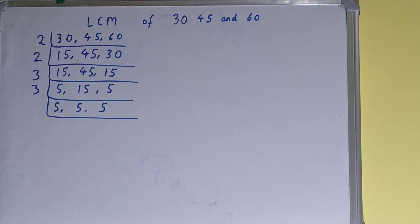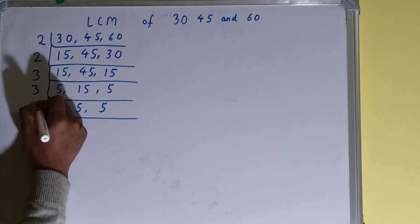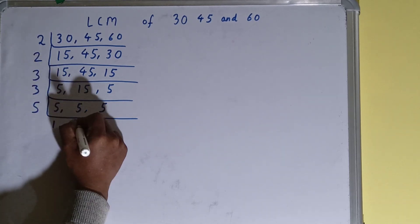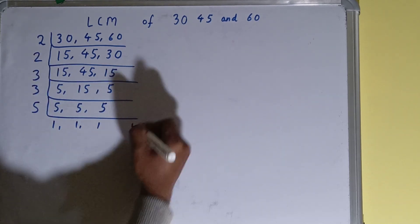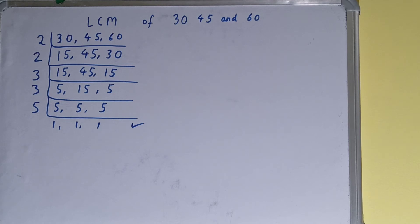None of the numbers are divisible by 3 anymore, so we go to the next prime number, which is 5. All three numbers can be divided by 5, so we divide and get 1, 1, 1. Once we get all 1s, we stop.